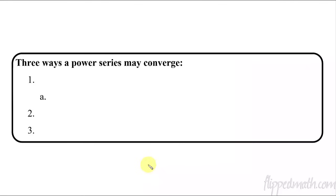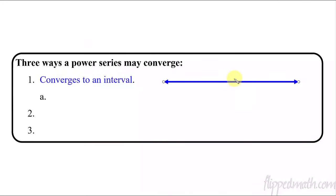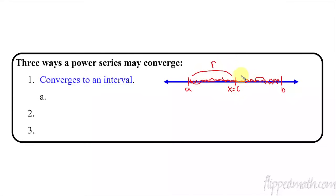There are three ways a power series may converge. The first is that it converges to an interval — not just one particular point, not to infinity, but just one specific interval. So if you draw a quick little line here with x equals c right in the middle, it's going to converge on an interval — let's say from A to B. Now it might be an open circle at A or a closed circle. It might be open at B or closed at B — meaning it might not include the endpoints or it might include them. This distance here is called the radius, R. From the edge of the interval to the center is the radius, and from the center to the other side is also R.